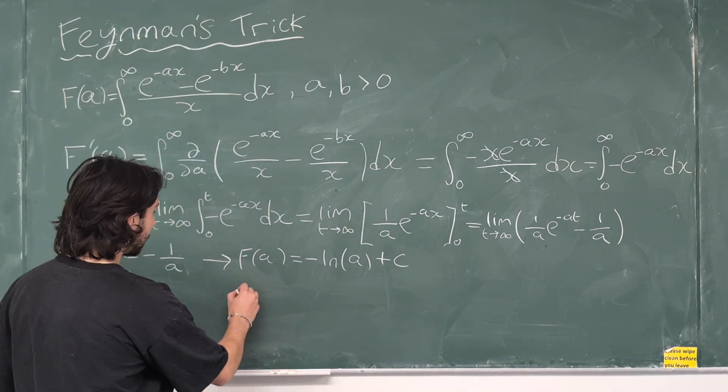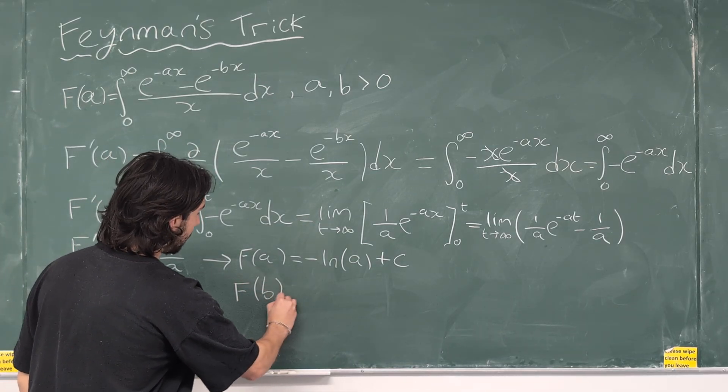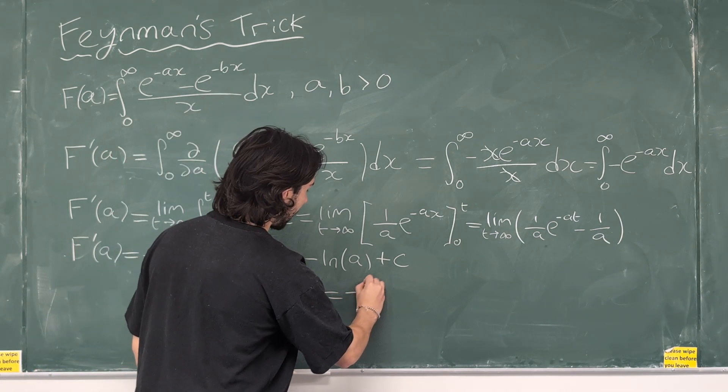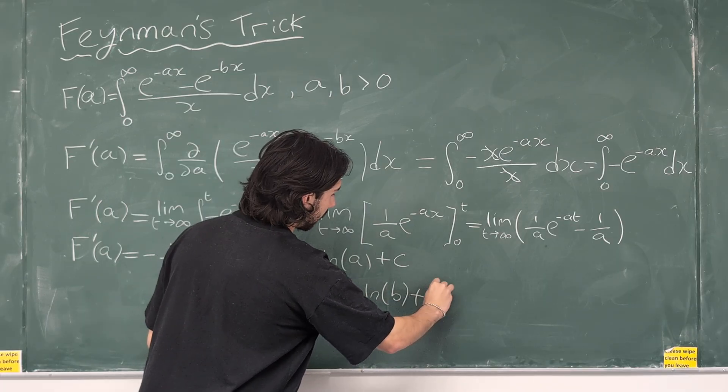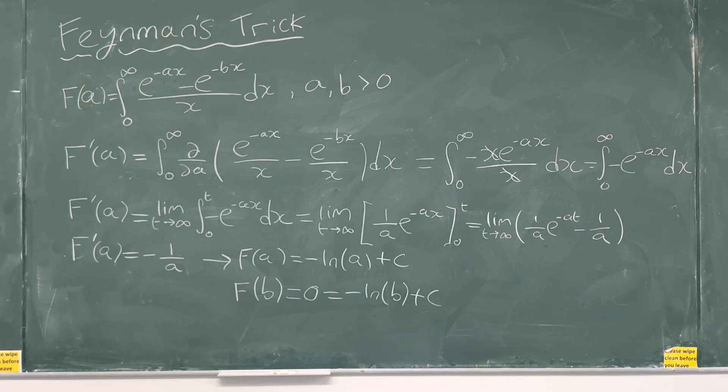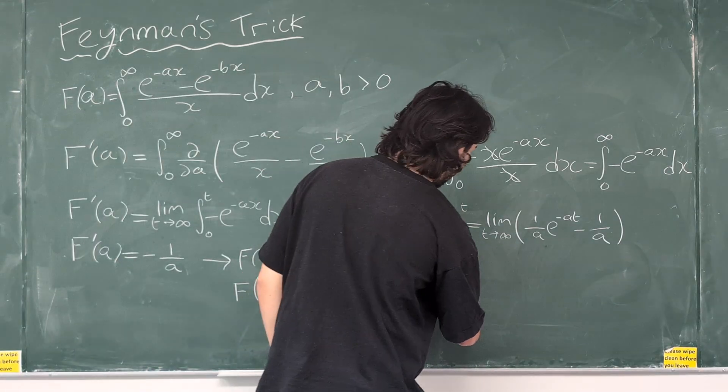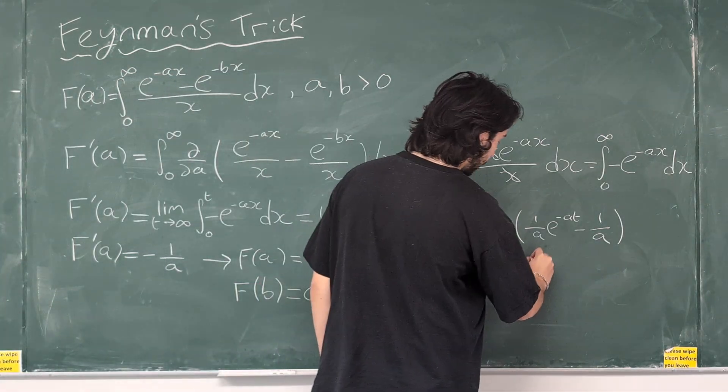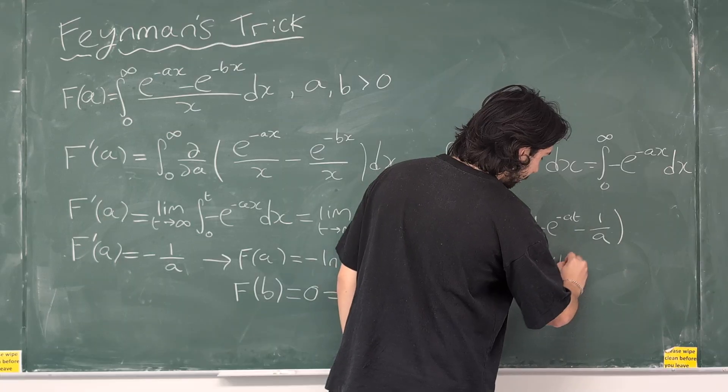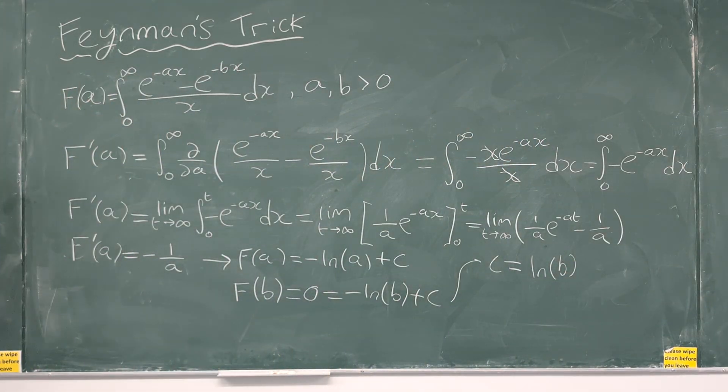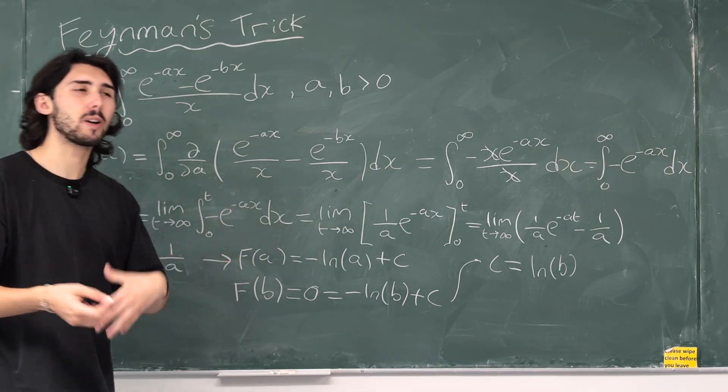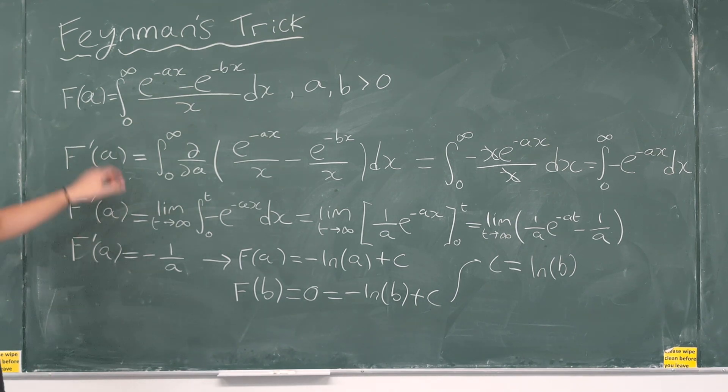So, f of b is 0 for whatever b is. So, that means that I can say f of b is 0. And f of b is minus the natural log of b plus c. So, that means that c is equal to the natural log of b. I appreciate it's a little bit weird because you've replaced a with b because we're treating a as a variable kind of and b is the constant. For the record, we technically could have done this with the b as well. But you just choose one.